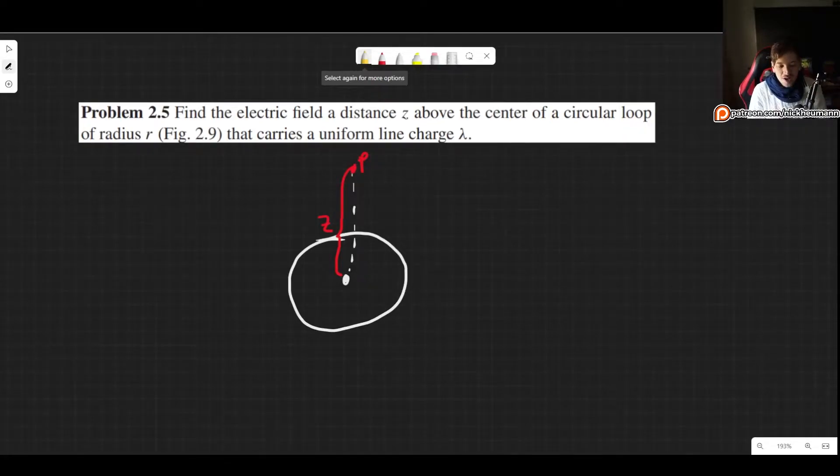Welcome! In this video I'll show you how to solve problem 2.5 as it appears in the fourth edition of Griffith's Introduction to Electrodynamics. This problem states: Find the electric field at distance z above the center of a circular loop of radius r that carries a uniform line charge lambda.